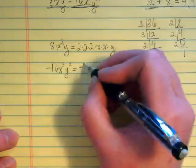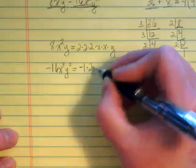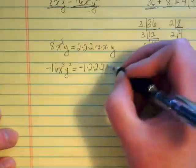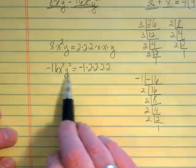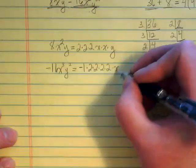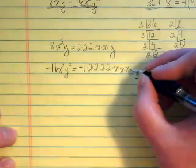So I'm going to have a negative 1, 2 times 2 times 2 times 2, because I've got all of these 2's. There's 3 x's on this one, and there's 2 y's.